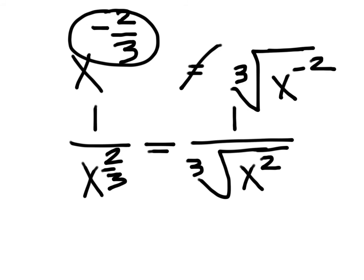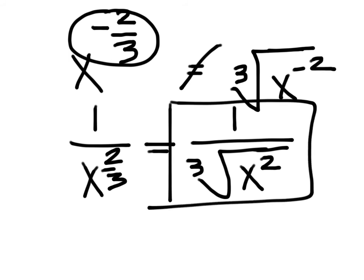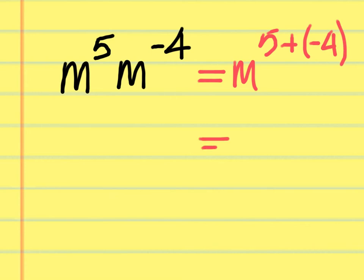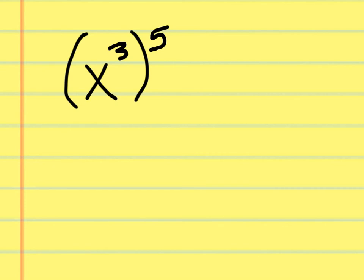Note from Algebra 1: you cannot have radical terms in the denominator, so you would rationalize — but that's not covered in this lesson. Quick practice: m to the fifth times m to the negative fourth equals m to the fifth plus negative four, which is m to the first, written simply as m.